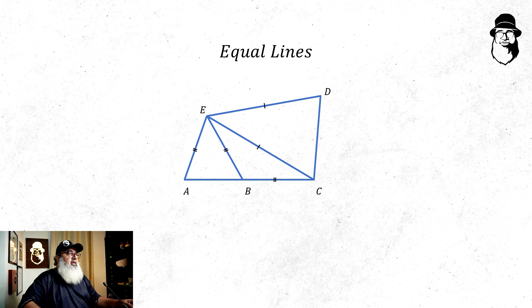So in this diagram AE, BE and BC are all equal in length. Also EC and ED are equal to each other.